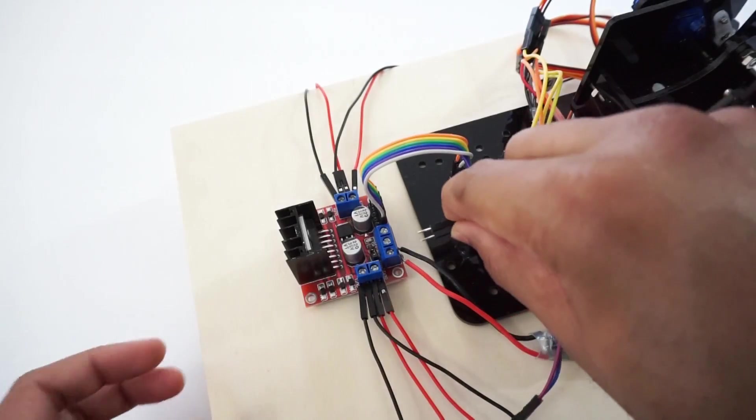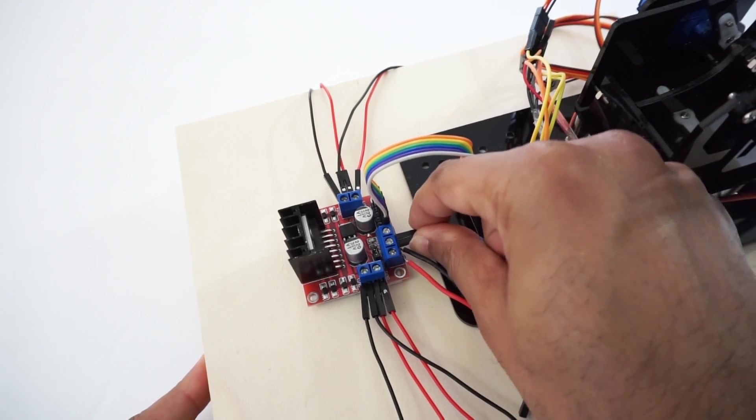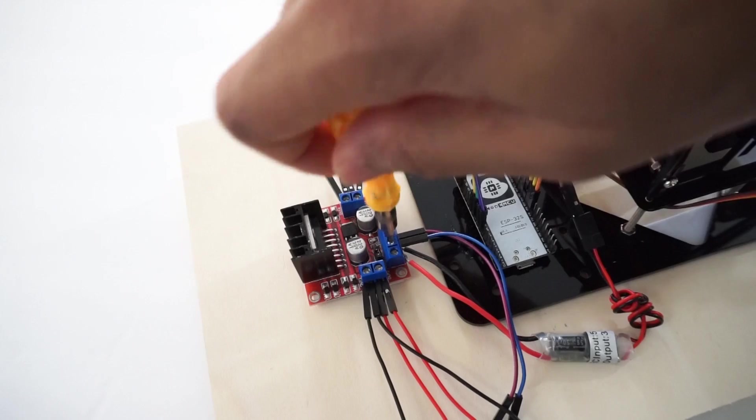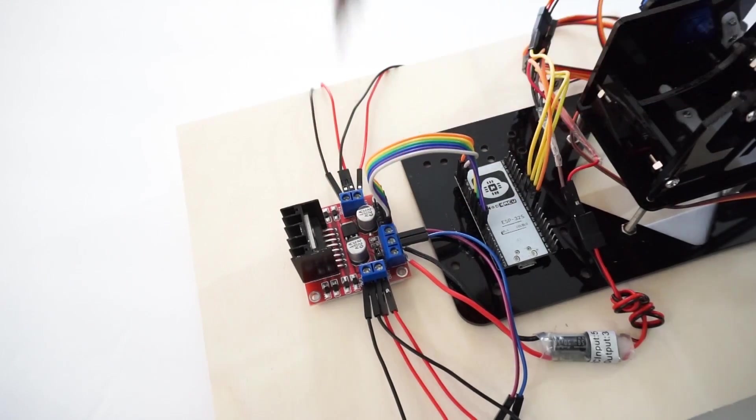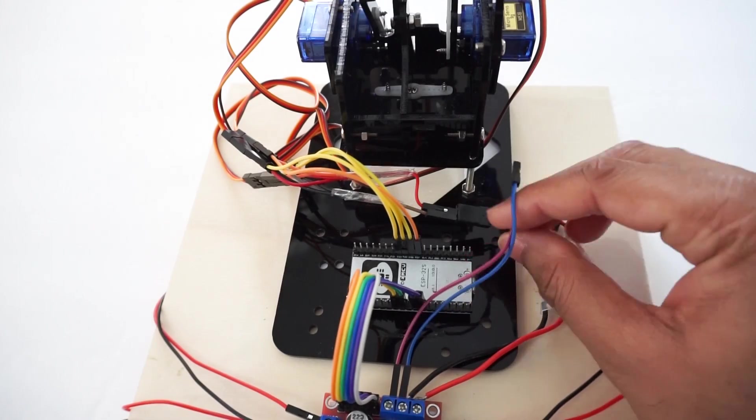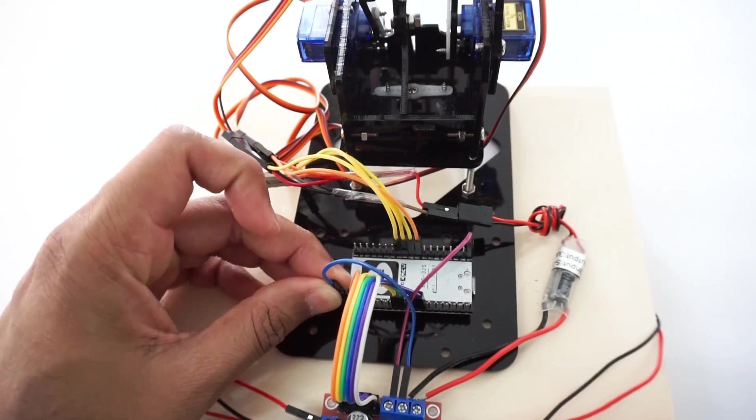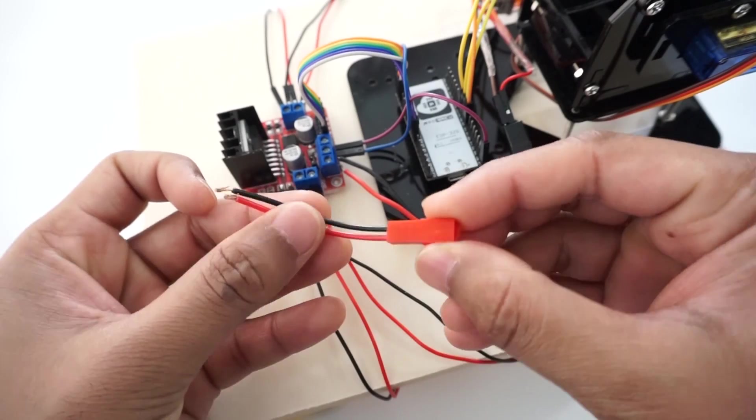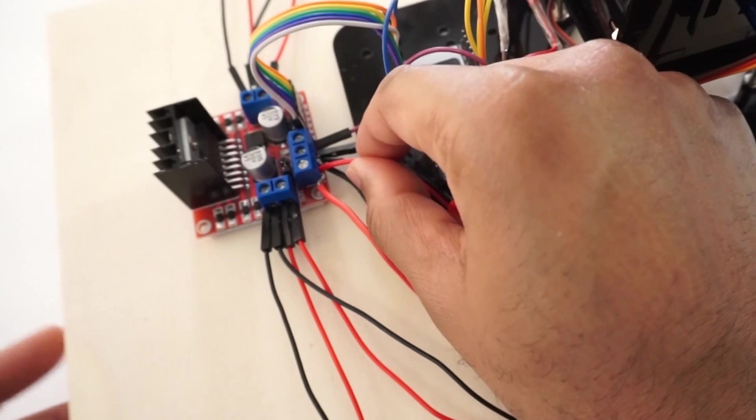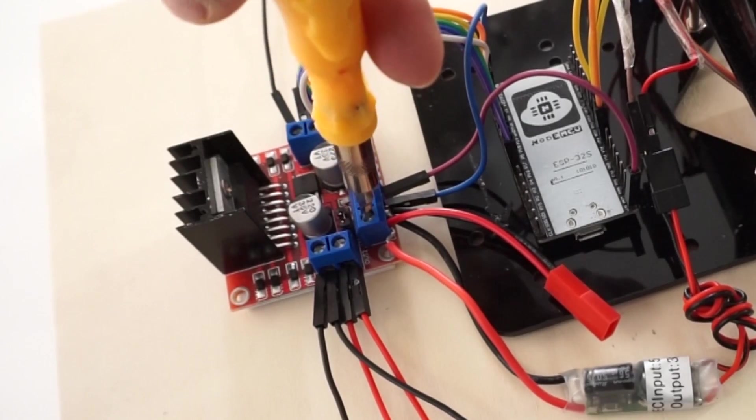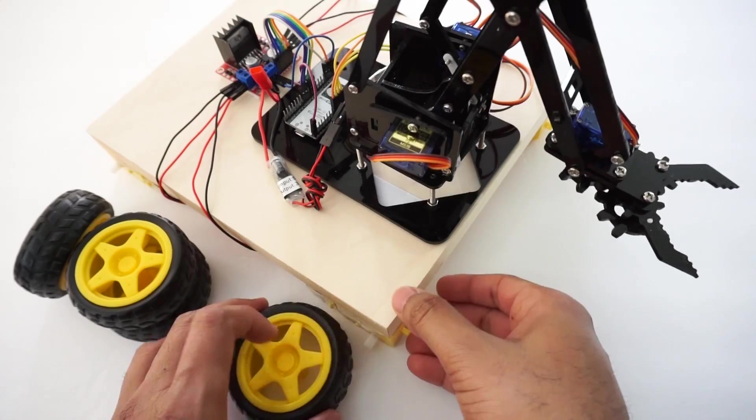We will take plus 5V and ground from L298N motor driver module and provide to ESP32 module through 5V and ground pin. Attach DC battery power connector to motor driver module to plus 12V pin and ground pin. Attach wheels to car now.